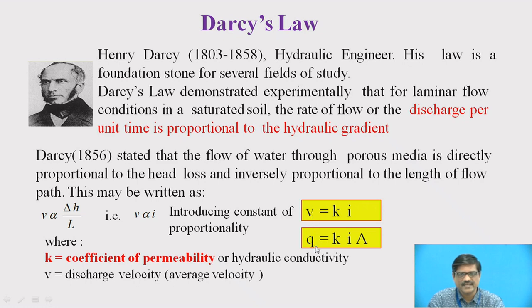Therefore, V is replaced by Q by A. Q is kept on the left hand side and divided by A is taken to the right hand side. Therefore, we get Q equal to K I A. This equation is very popularly called Darcy's equation. In this equation, K is the coefficient of permeability. Now, we need to find this coefficient of permeability, which is also called hydraulic conductivity of soil.